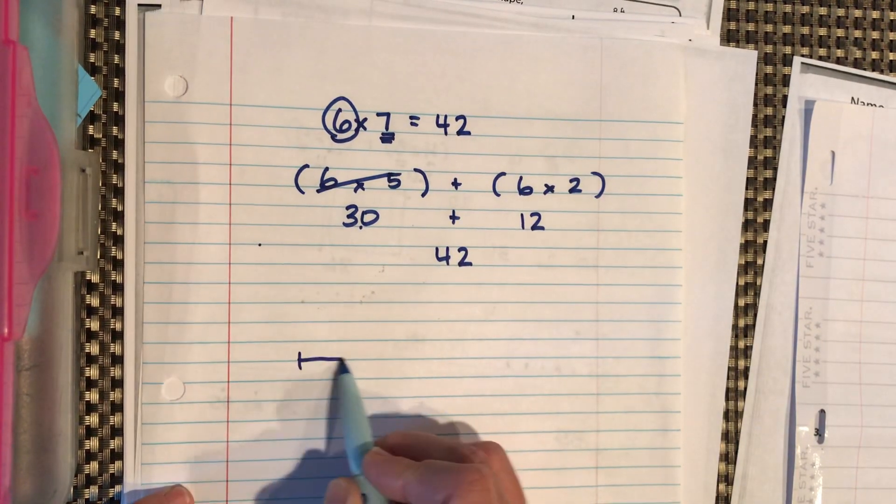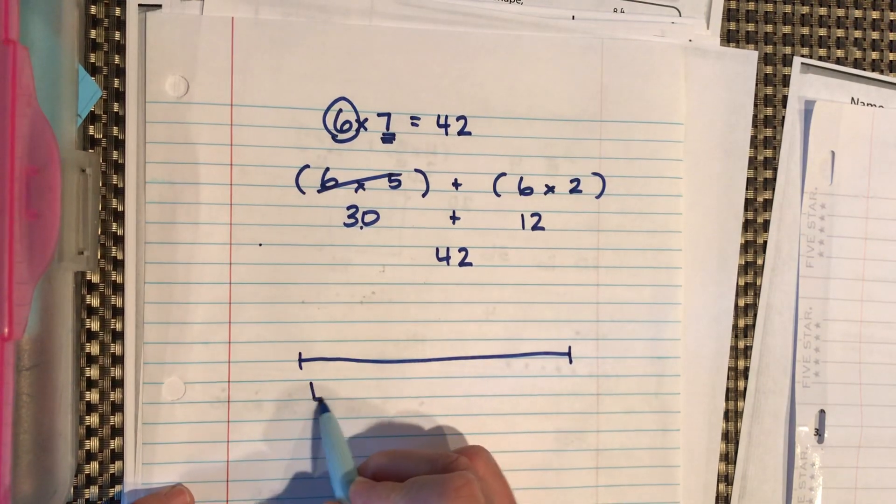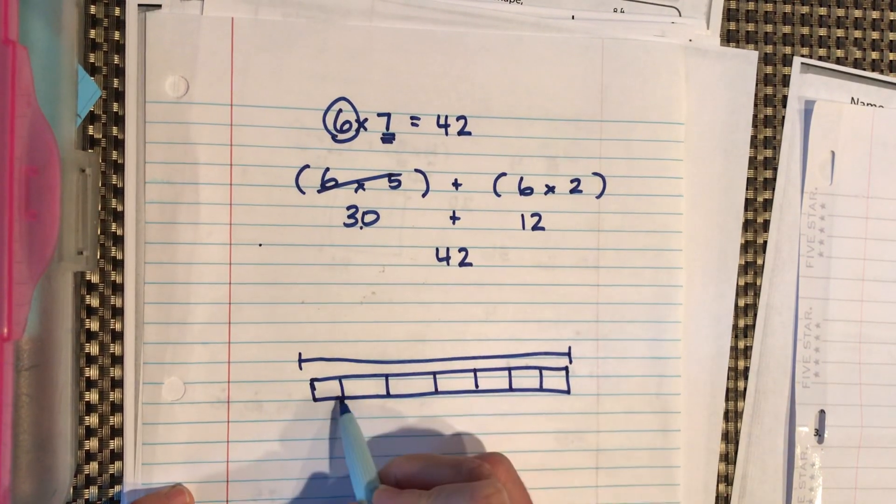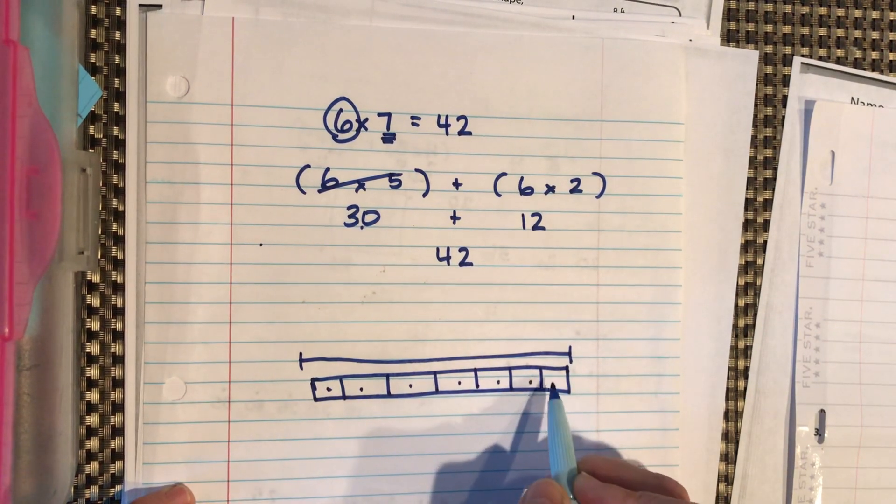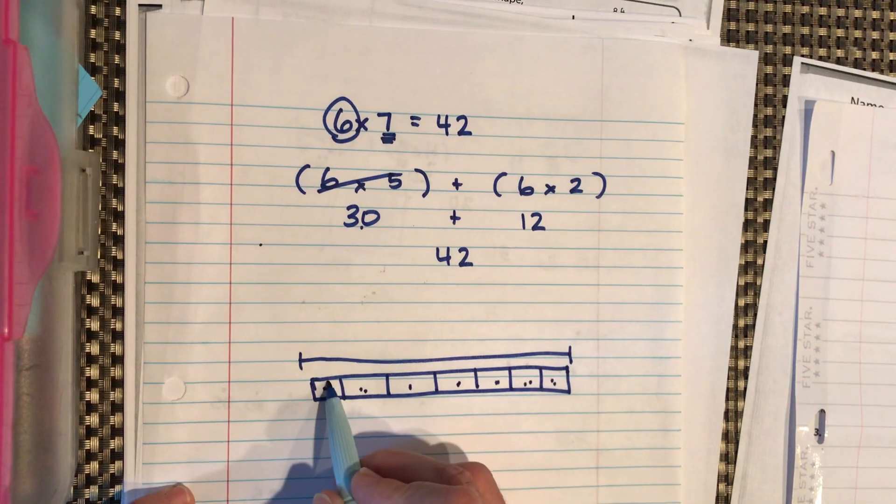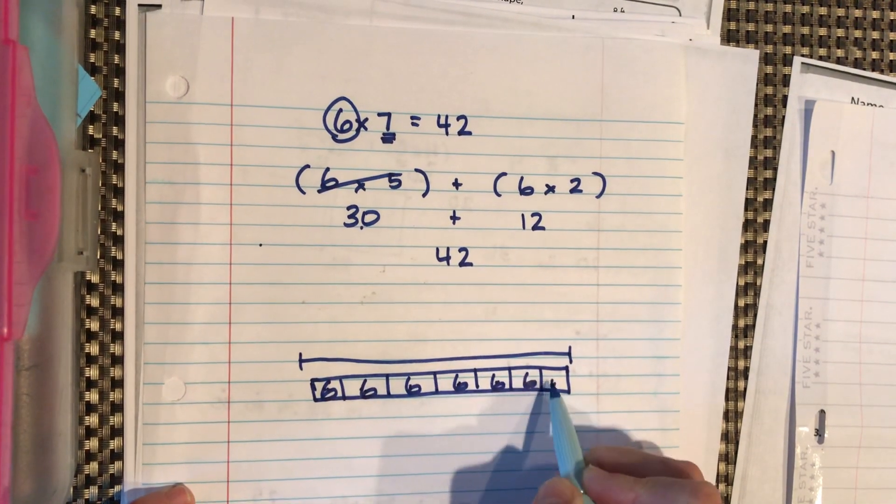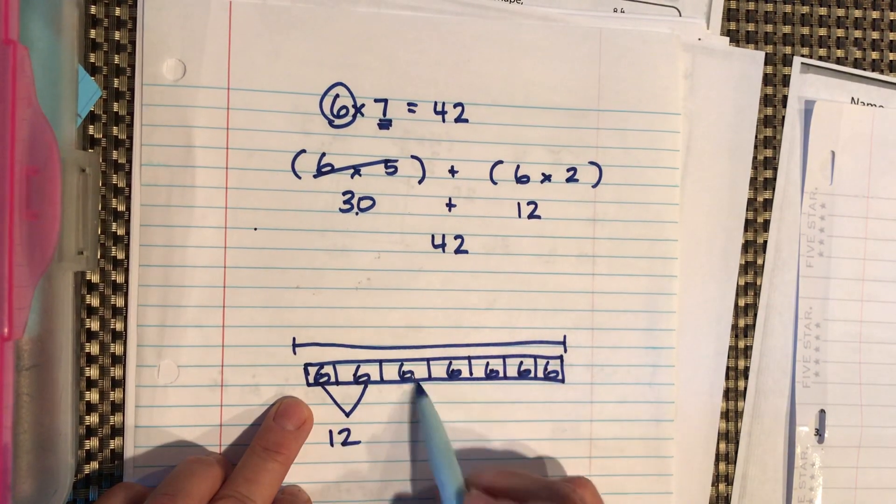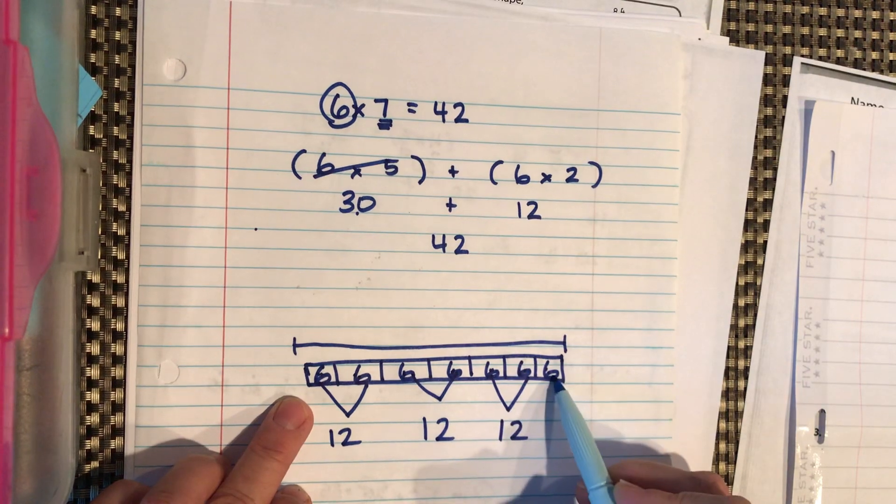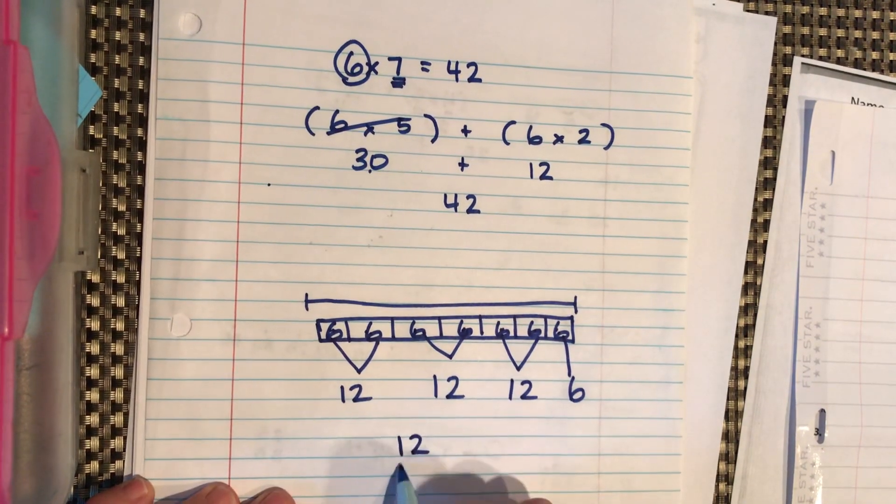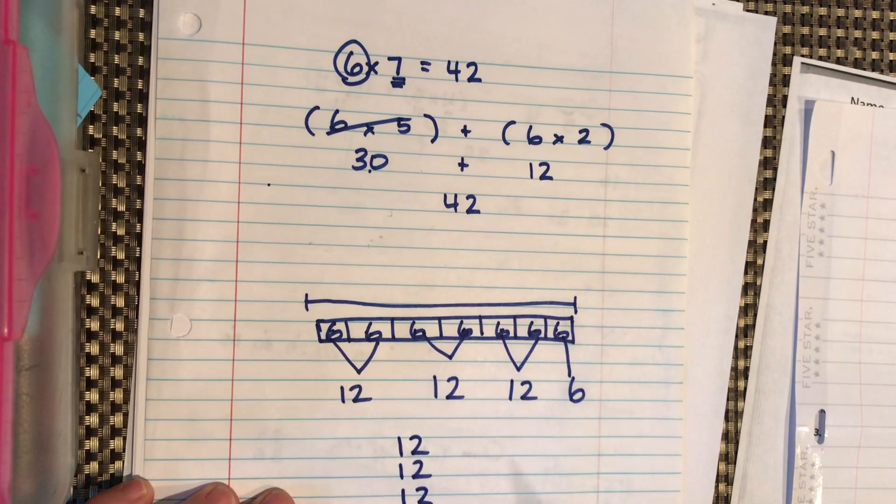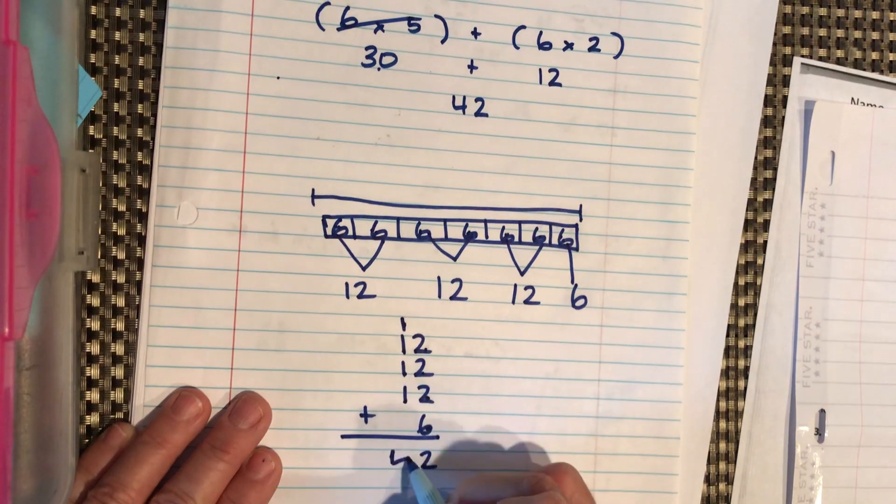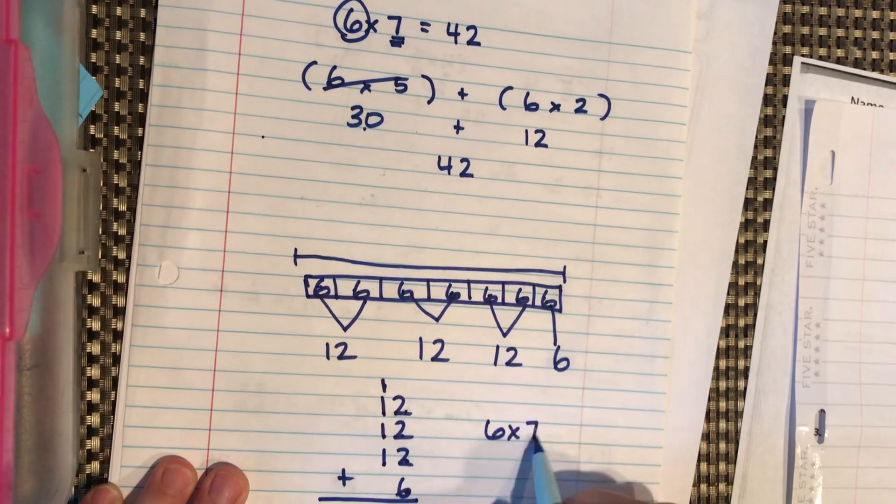We could have also done a bar diagram. Okay. 6 groups of 7. So if I'm going to make 7 groups, I draw 6 lines. 2, 3, 4, 5, 6. Not perfectly even, but that's okay. So 1, 2, 3, 4, 5, 6, 7. 1, 2, 3, 4, 5, 6, 7. So I'm going to put a 6 in each one. So I did 7 groups of 6, but you could easily have done 6 groups of 7. So let's see. We have, I know that 6 plus 6 is 12. And then I don't have another one for that, so that's going to be 6. So then I can do 12 plus 12 plus 12 plus 6 and add it up. 2, 4, 6. 6 plus 6 is 12. 1, 2, 3, 4. 4, 42. 6 times 7 equals 42.